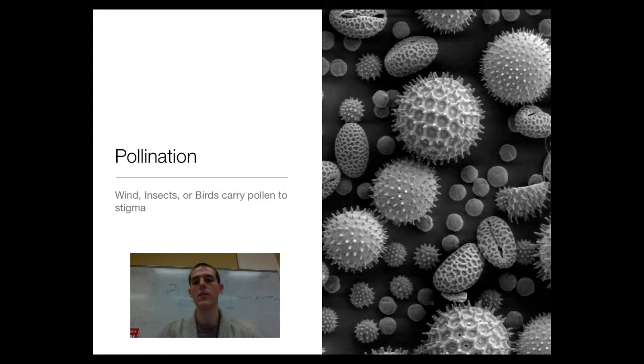Now that we have got our gametes, we need to actually pollinate these things. You've seen this picture before, this is many different types of pollen grain. Pollination can happen in a ton of different ways. You can have pollen just carried on the wind. When that pollen grain sticks to the stigma of a flower, pollination has occurred.